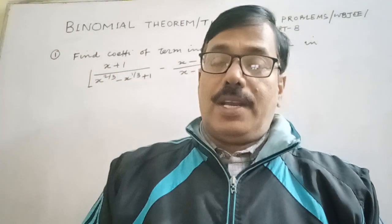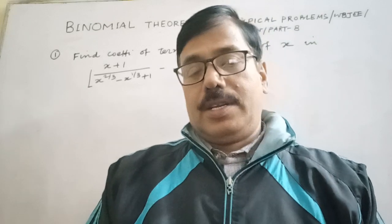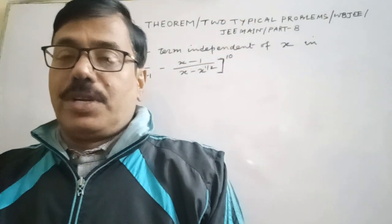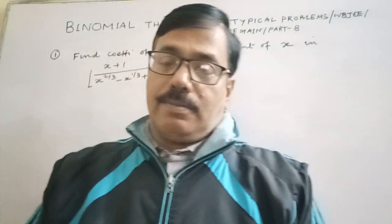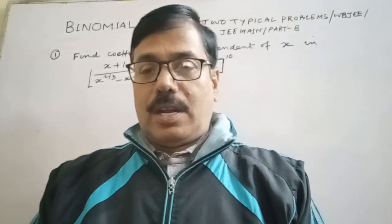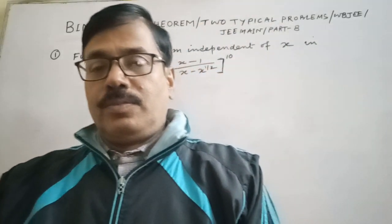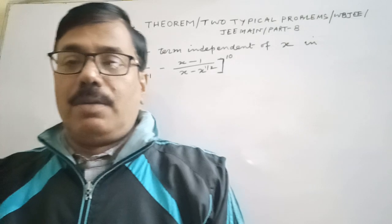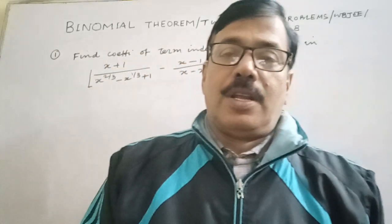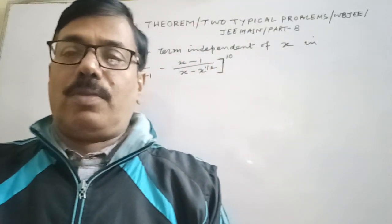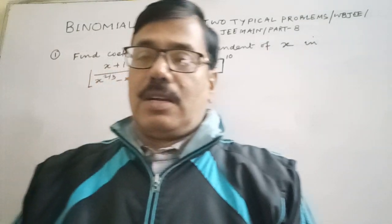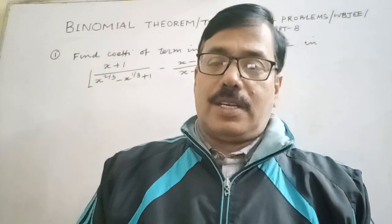The five types are: number one, to find divisibility; number two, to find the coefficient of any term; number three, to find the independent term; number four, to find the middle term; and number five, using results of permutation and combination.